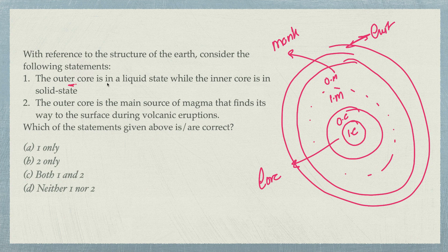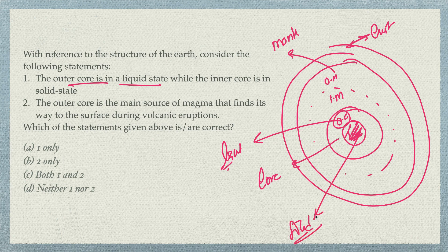The outer core is liquid and the inner core is solid — this is a true statement. You should know this. The temperature increases as we go deeper — approximately one degree every 165 meters. Though the temperature at the inner core is very high, it remains solid due to extremely high pressure. The outer core is liquid because the pressure is somewhat lower. Just like LPG gas in cylinders — due to excessive pressure, gas converts to liquid, and with even more pressure it can become solid.